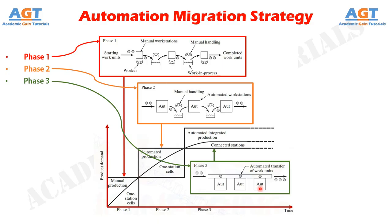Details of the automation migration strategy vary from company to company, depending on the types of products they make and the manufacturing processes they perform. But well-managed manufacturing companies have policies like the automation migration strategy.